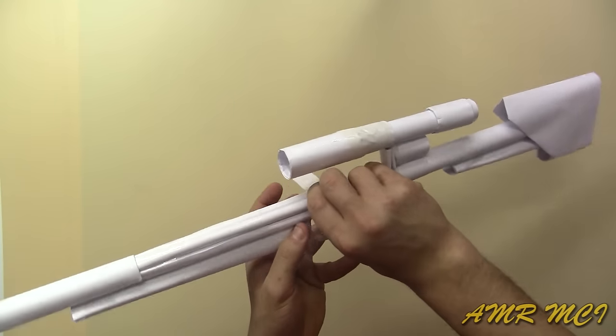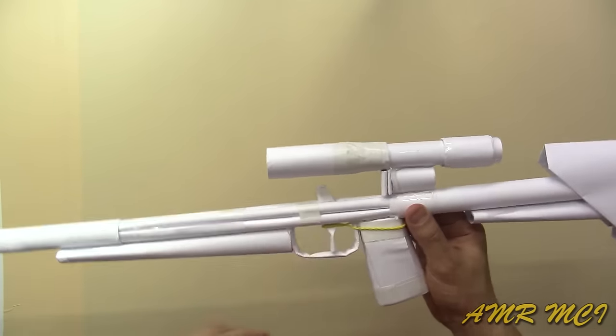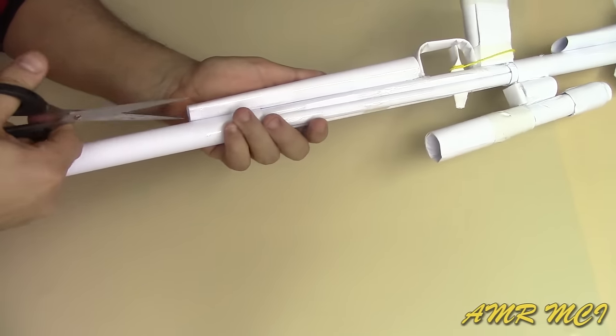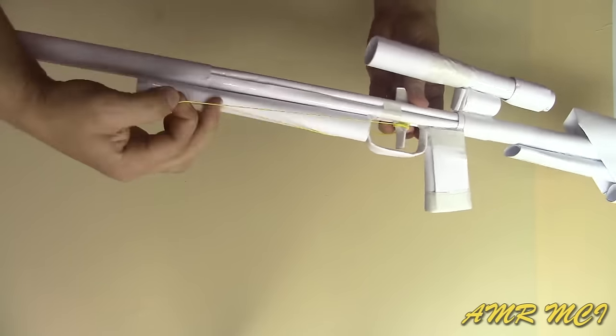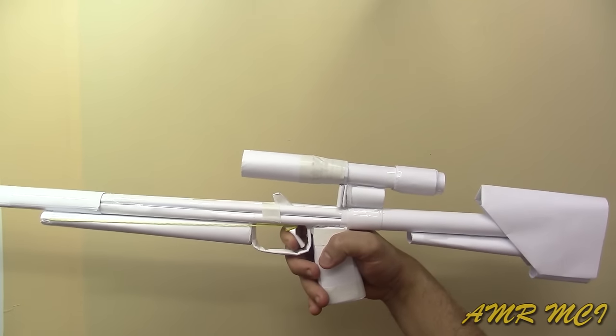Put a piece of tape in front of the trigger to prevent it from slipping. Then make a side cut to the paper roll at the front to hang the rubber band on it. This way, whenever you pull the trigger, the rubber band will pull it back.